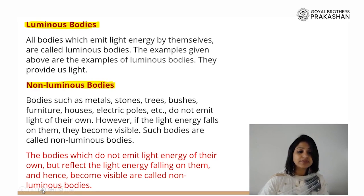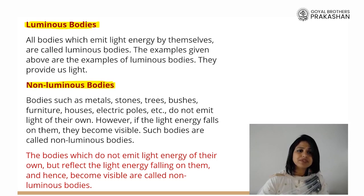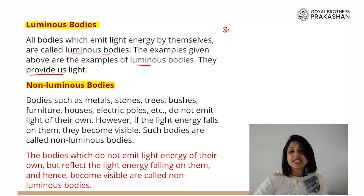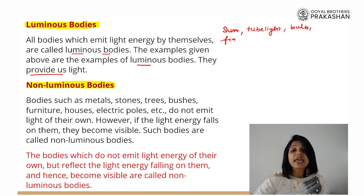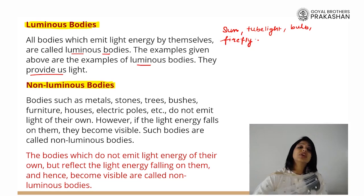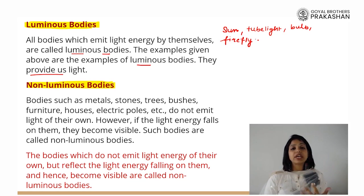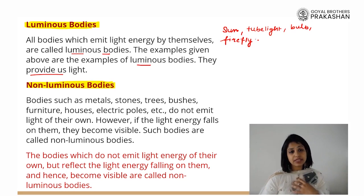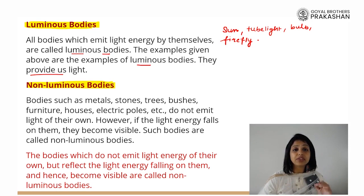So let us understand the differences between luminous and non-luminous bodies. All the bodies which emit light energy by themselves are called luminous bodies. The examples are the sun, tube light, electric bulb, and even firefly and glowworm. All those objects and bodies which are able to emit light on their own are called luminous bodies. That means the ones which are providing us with their light are what we define as luminous bodies.